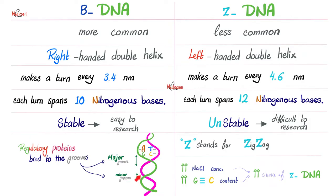These grooves are important because they provide binding sites to regulatory proteins. Why is Z zigzag? Well, probably due to high salt concentration or high GC content, increasing the chance of zigzagging. This zigzag is very unstable, difficult to research. It makes a turn every 4.6 nanometers and each spans 12 bases.